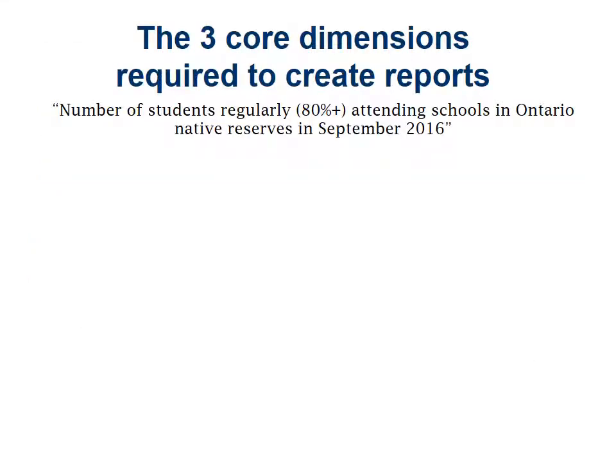And that is how we get to our three core dimensions — what we like to call the three pillars. This is what's required to create reports. So looking at this quote here, this is an example indicator. We've written it as: the number of students regularly — which is defined as 80% or more — attending schools in Ontario Native Reserves in September 2016.